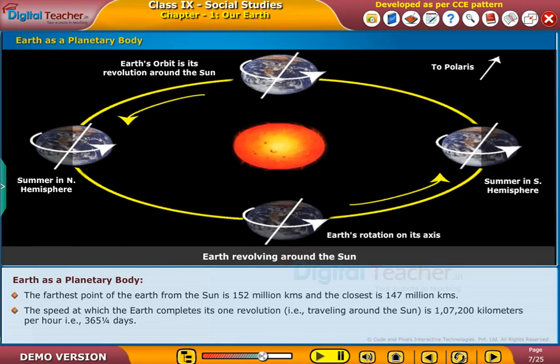The speed at which the Earth completes its one revolution, that is traveling around the sun, is 1,07,200 km per hour. That is 365 one-fourth days.